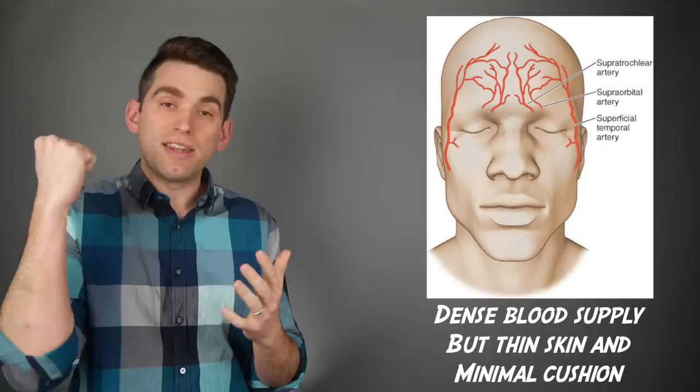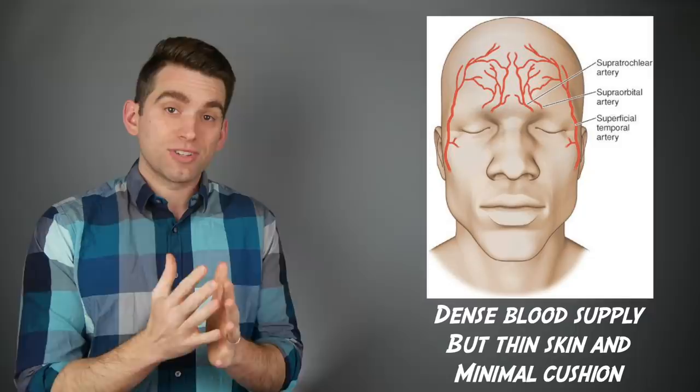If you get punched in the arm or the leg, there's a lot of cushion between the muscle and between the fat and the thickness of the skin that helps protect those blood vessels.